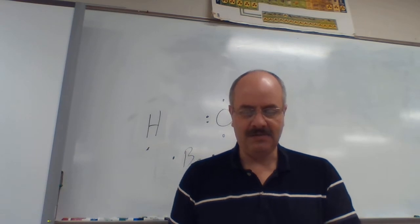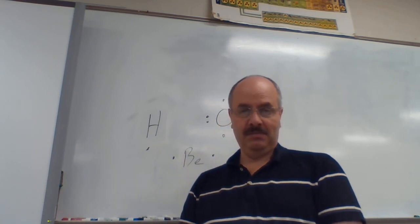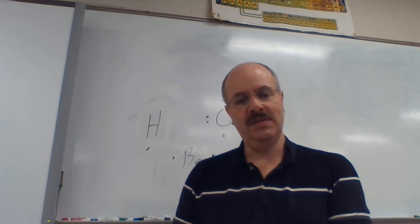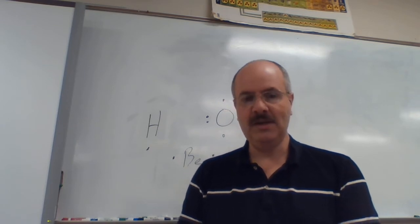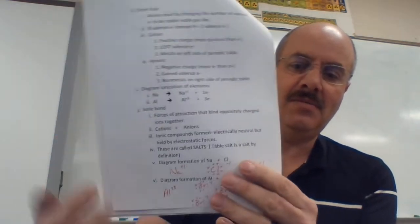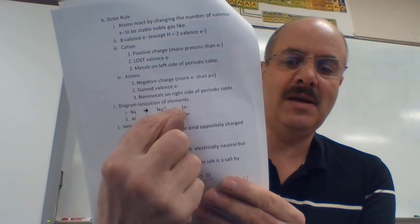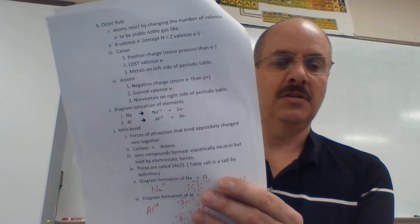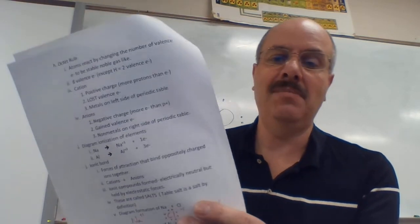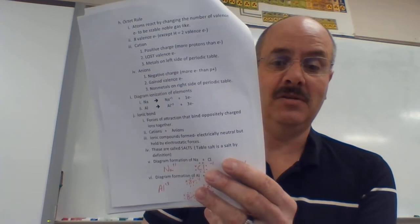All right, part number two. We left off at cations and anions, so we're diagramming the ionization of elements. In your notes I had down sodium, and what he's going to do is lose some electrons, so we end up with Na with a plus one and one electron that's floating around. It can go do something — it can be taken on by something else — and we end up with this Na that's got a positive one.